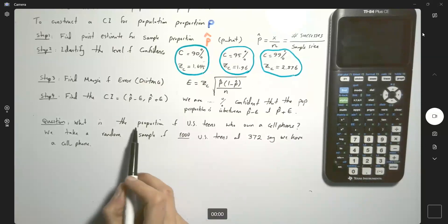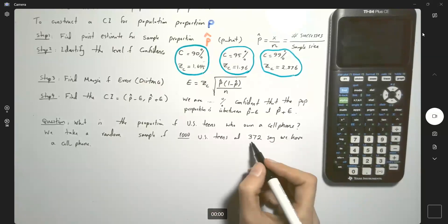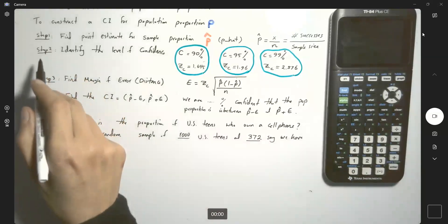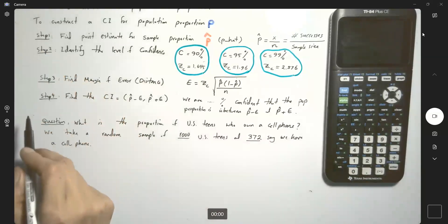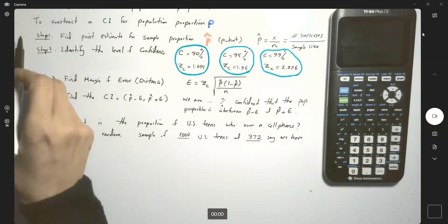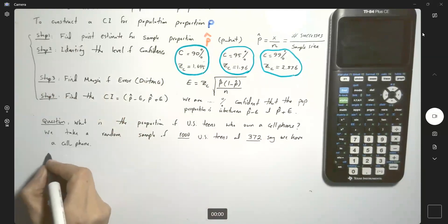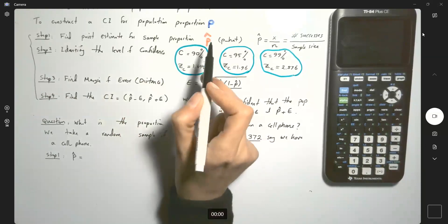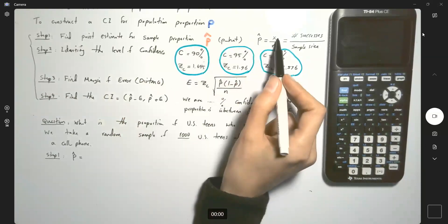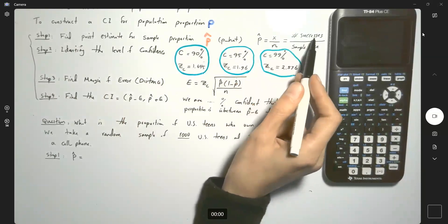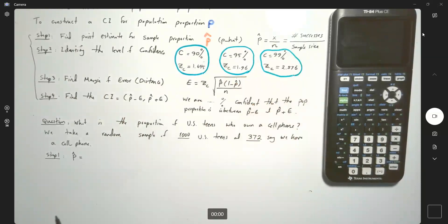But what is the true population proportion? We're not going to stop here. We have to build or construct a confidence interval for population proportion. We need to follow these important steps. In step one, find the point estimate. The point estimate P hat is defined as x divided by n, the number of successes divided by sample size.